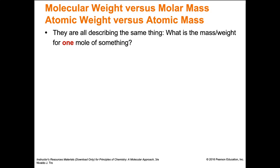The first topic today is molecular weight. Molecular weight versus molar mass, atomic weight versus atomic mass — what are these terms and what do they mean? They're all describing the same thing: what is the mass or the weight of one mole of something. So molecular weight, molar mass, atomic weight, atomic mass — these all describe the mass or weight of one mole of something.